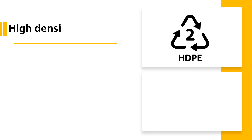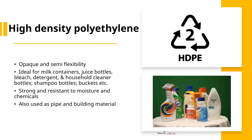Number 2 is given to high density polyethylene. This number is found in plastic products where opacity and semi-flexibility is required. For example, milk containers, juice bottles, buckets, bleach, detergents, shampoo and household cleaner bottles. HDPE is also strong and resistant to moisture and chemicals, which makes it ideal for containers, pipes and other building materials.